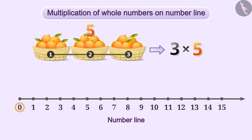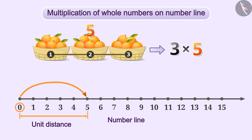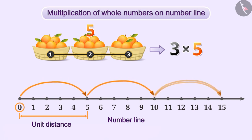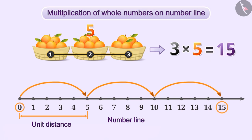Since five fruits have been repeated three times, starting from zero, we move five units at a time: from zero to five, five to ten, and ten to fifteen. We will use arrows pointing towards the right direction. The last arrow points to fifteen. Therefore, this is the product of the two numbers. That is, three multiplied by five is equal to fifteen.